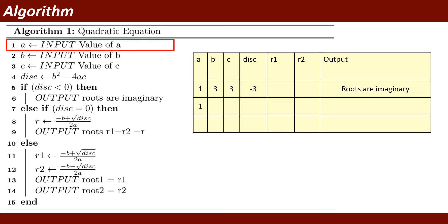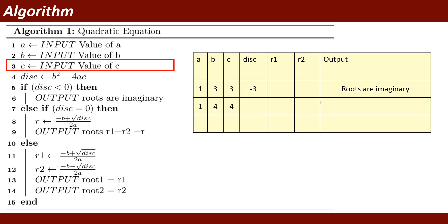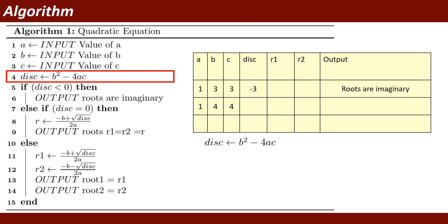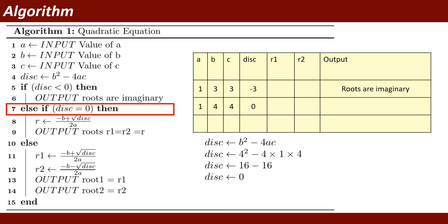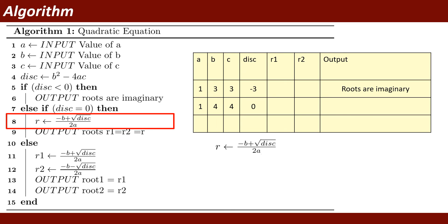In the second dry run, give A = 1, B = 4, C = 4. Disk = B squared minus 4AC = 4 squared minus 4 times 1 times 4 = 16 minus 16 = 0. The first condition, disk less than 0, is false. The second condition, disk equal to 0, is true, so it calculates the root: r = minus B plus square root of disk divided by 2A, giving r = minus 2.